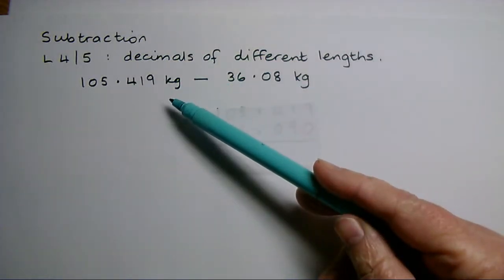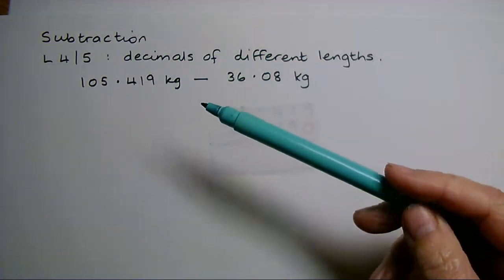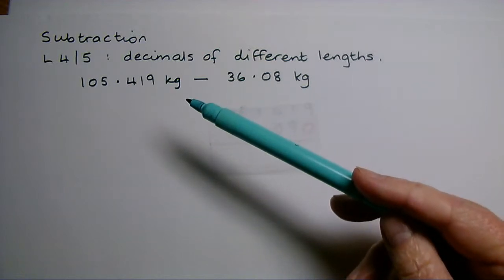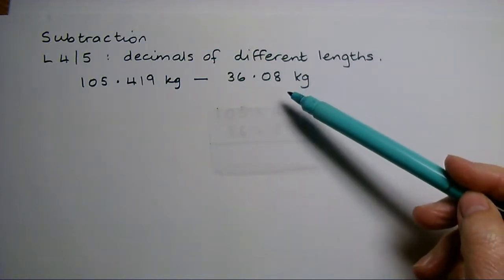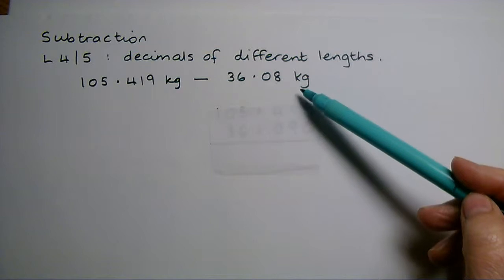You can't take away grams from kilograms or meters from kilometers. You need to convert one or the other of your amounts until you've got them both in the same units.